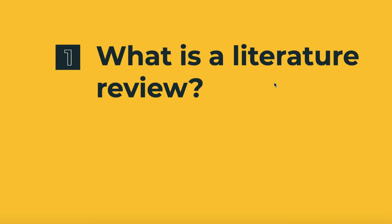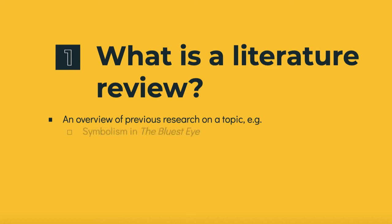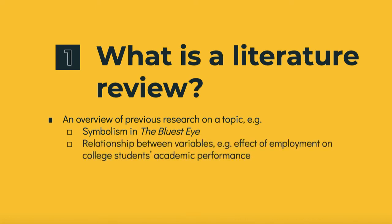A literature review is an overview of previous research on a specific topic. For example, in an English literature class, you might research what other scholars have said about the symbolism in Toni Morrison's The Bluest Eye. In some fields like sociology, literature reviews often focus on examining the relationship between variables — for example, what previous scholars have said about the effect of employment on college students' academic performance.